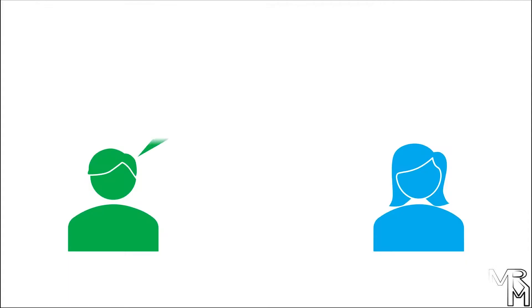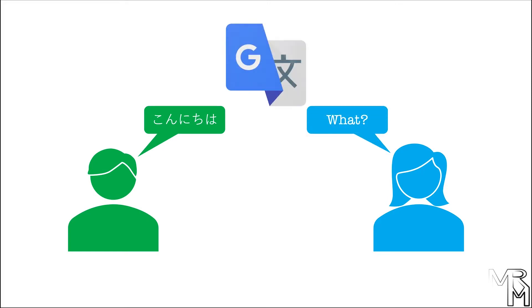There is one problem though. We humans are not very good at working with long numeric sequences consisting of ones and zeros only. In other words, we are not comfortable with the computer language, and computers don't understand our human languages. What do you do when you want to communicate something to someone who doesn't understand your language? Right, use a translator to help you. A similar approach has been taken in programming.